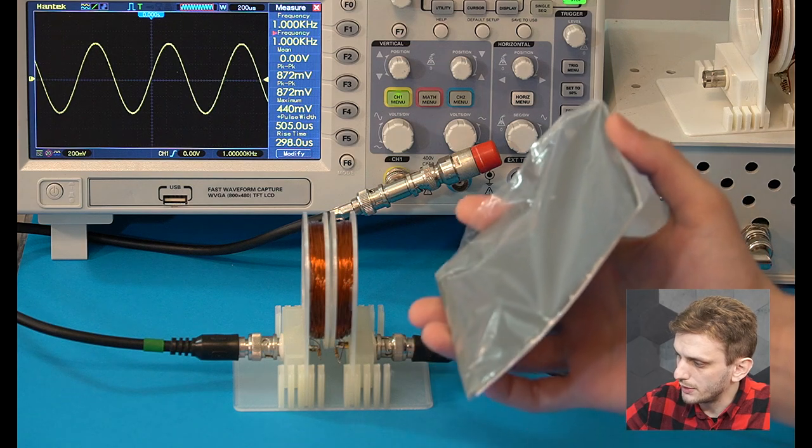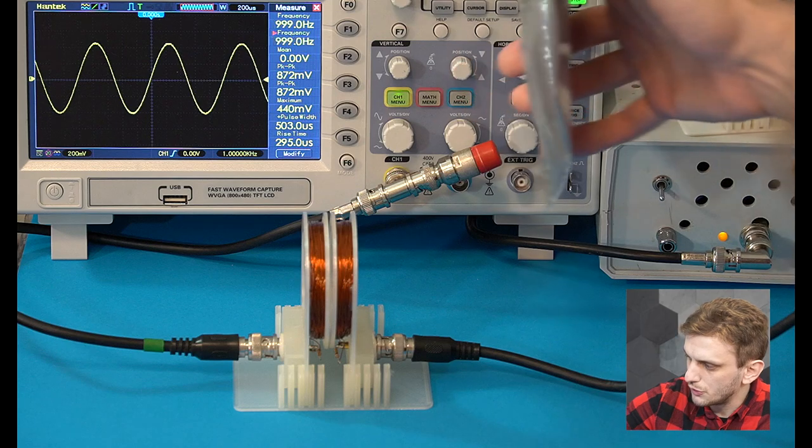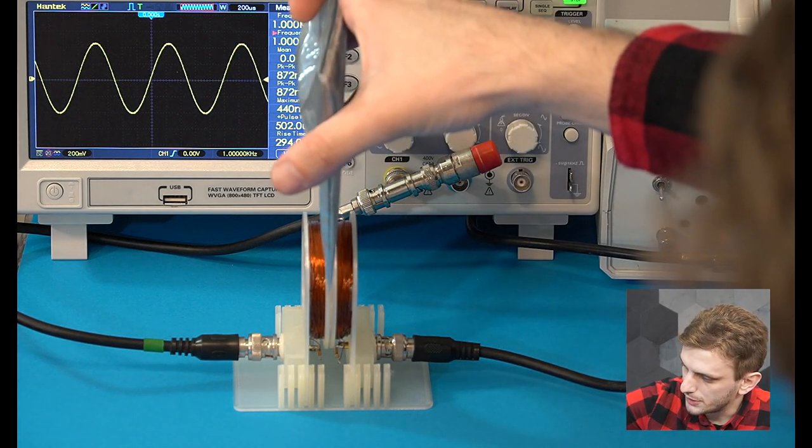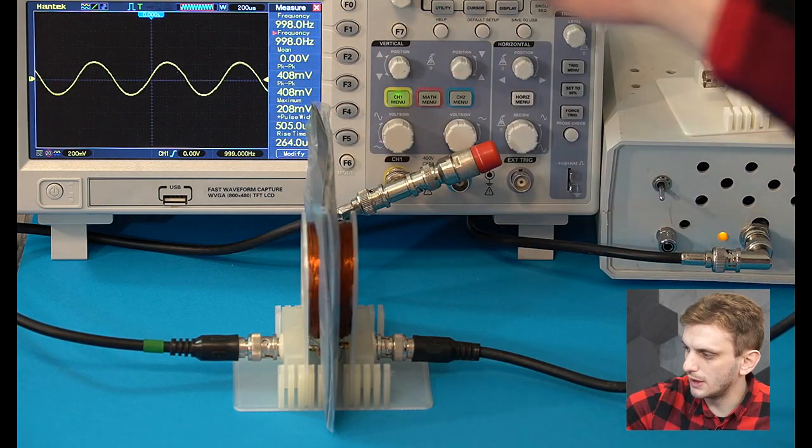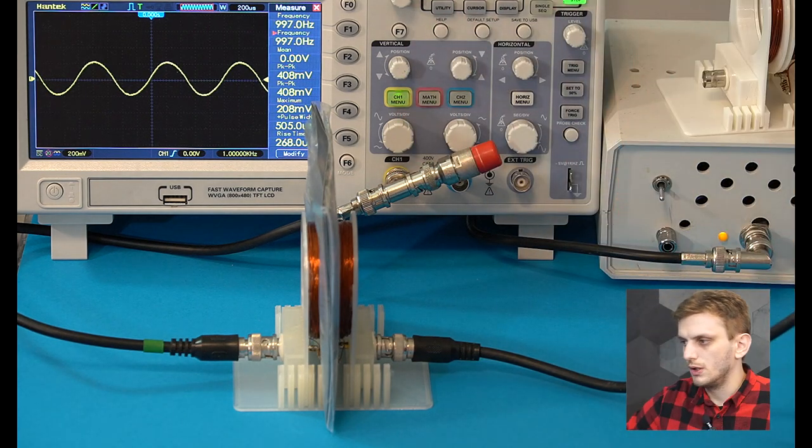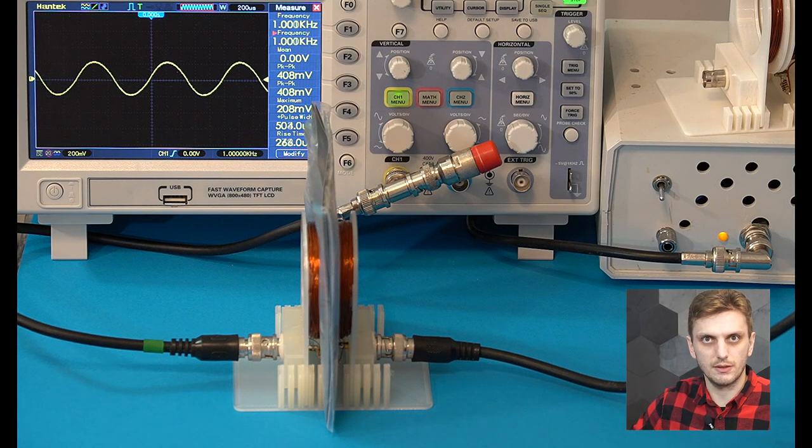Right now if I insert this into my inductors, we have 872 millivolts of signal being induced. If I insert this into the two coils, we can see that our induced voltage decreases to about 408. We basically halved the signal level that gets into the second inductor.